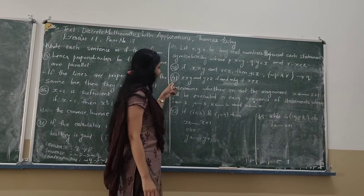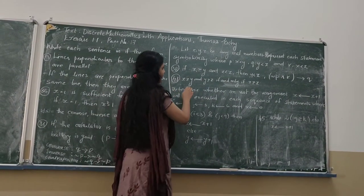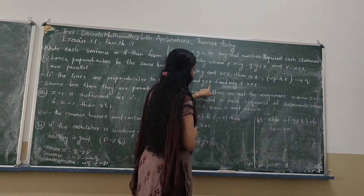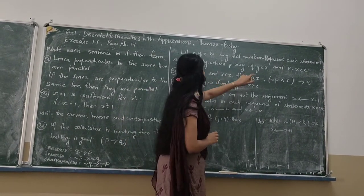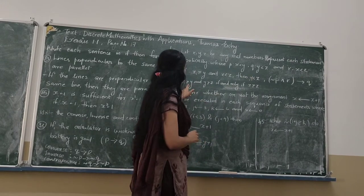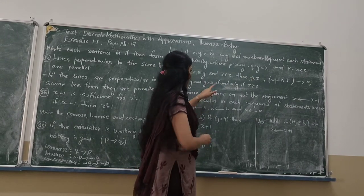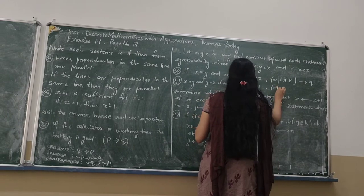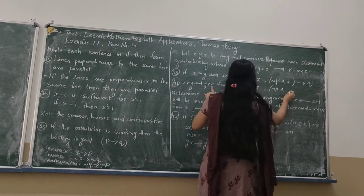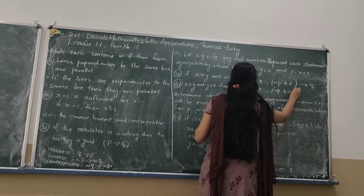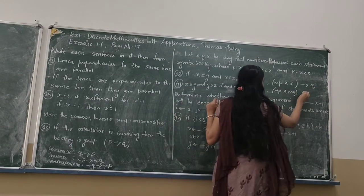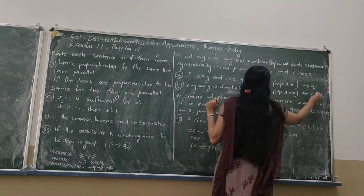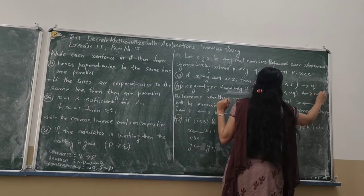The next part: X greater than Y is negation Q, and Y greater than or equal to Z is also negation Q. So X greater than Y and Y greater than or equal to Z means negation Q and negation Q, which implies X greater than or equal to Z, that is the negation R statement.